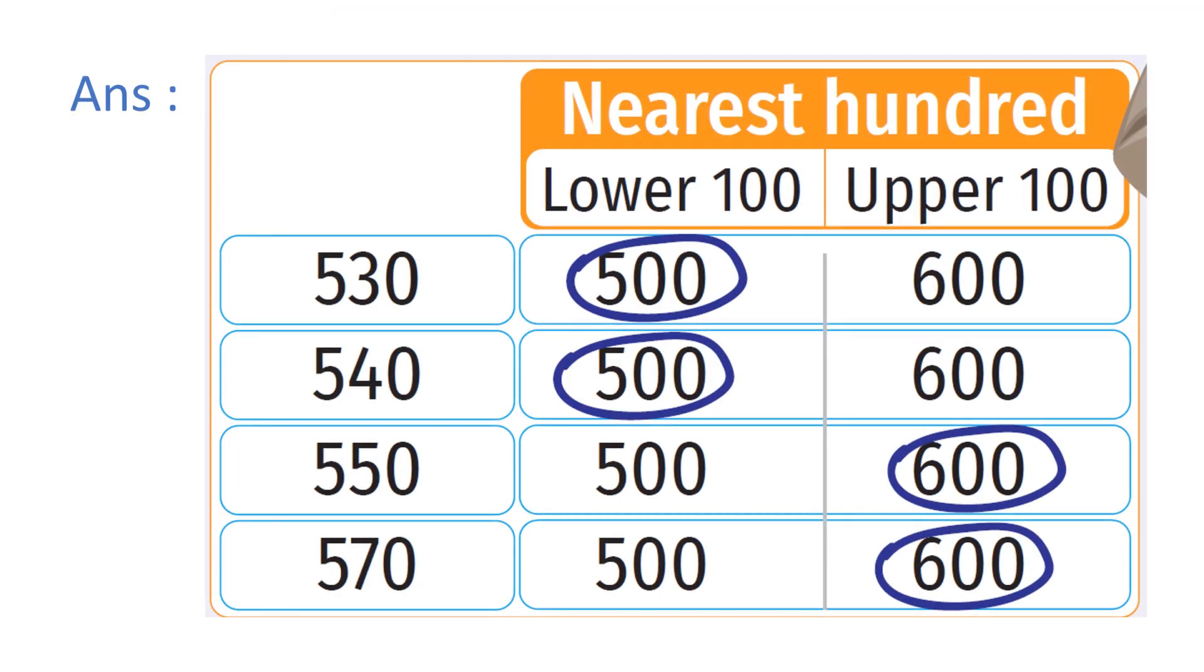For the four numbers, the table shows the lower 100 and upper 100, and the estimated value to the nearest 100 is circled.